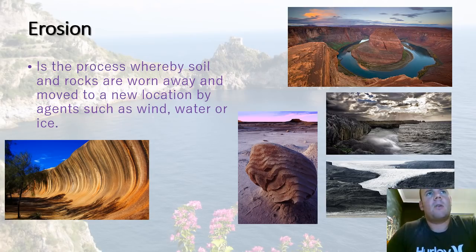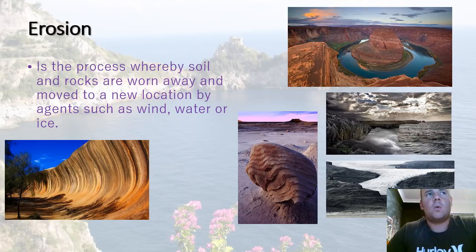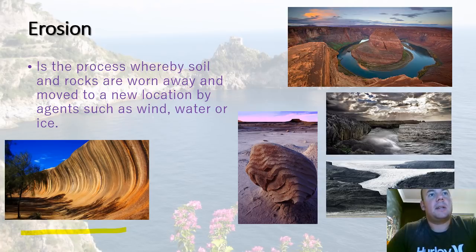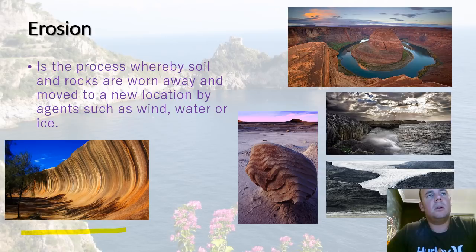The next process is erosion — this is whereby soil and rocks are worn away and moved to a new location by agents such as wind, water, and ice. If we look at the wave rock, this was created by the wind hitting this piece of rock over a long period of time, and as a result has created this wave shape.